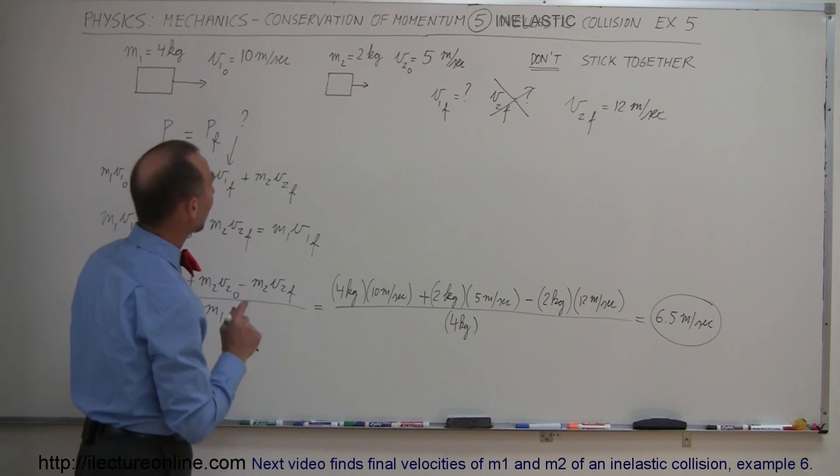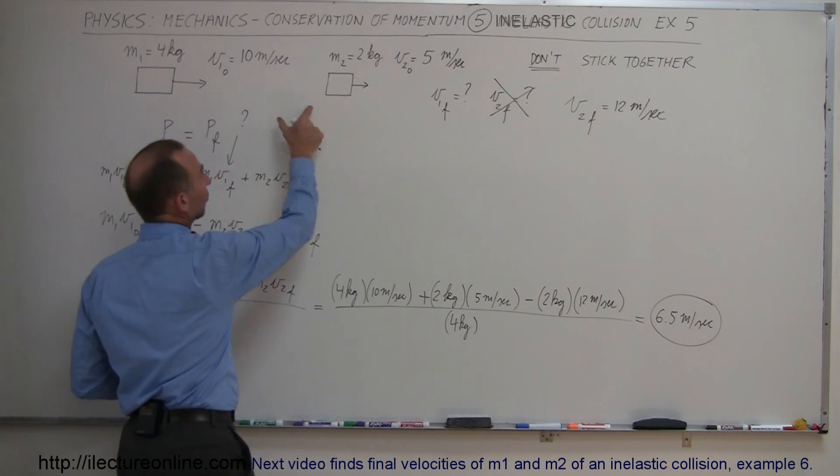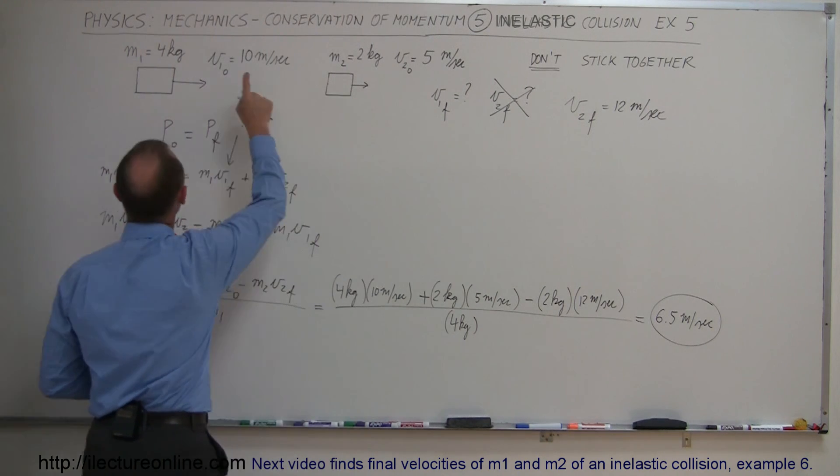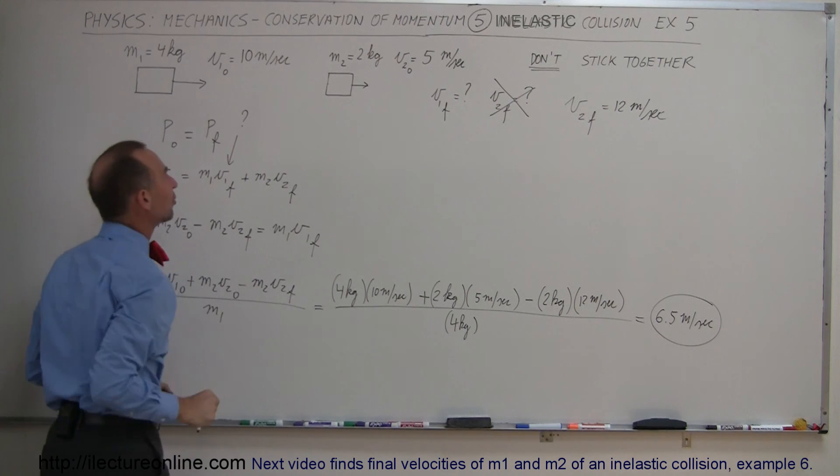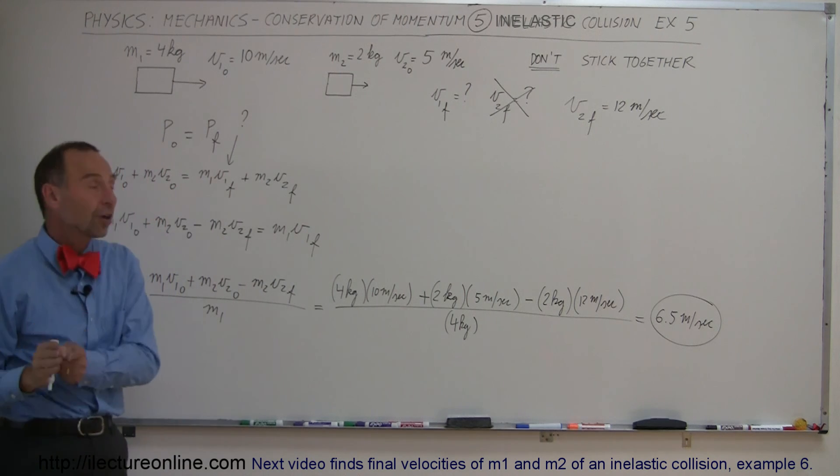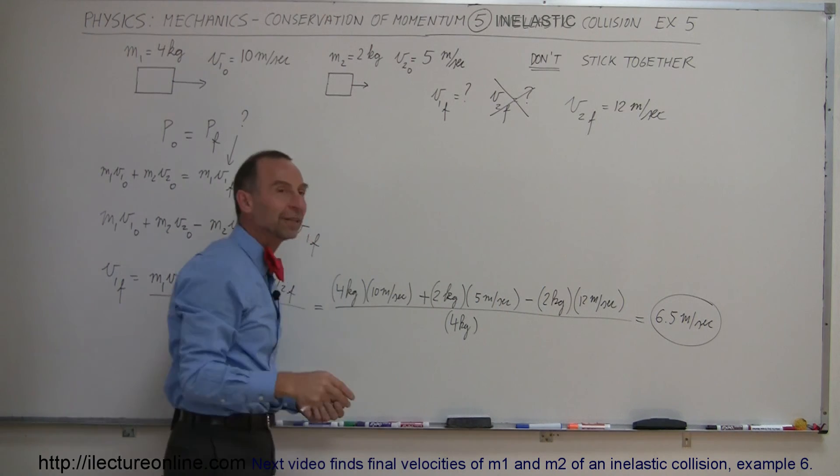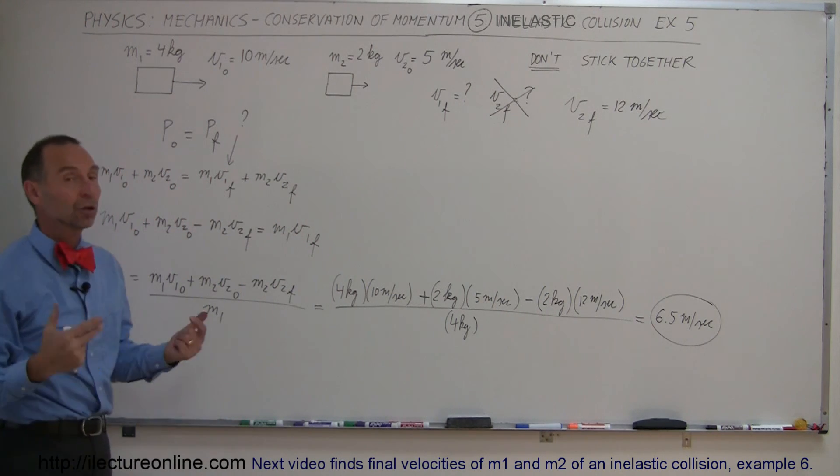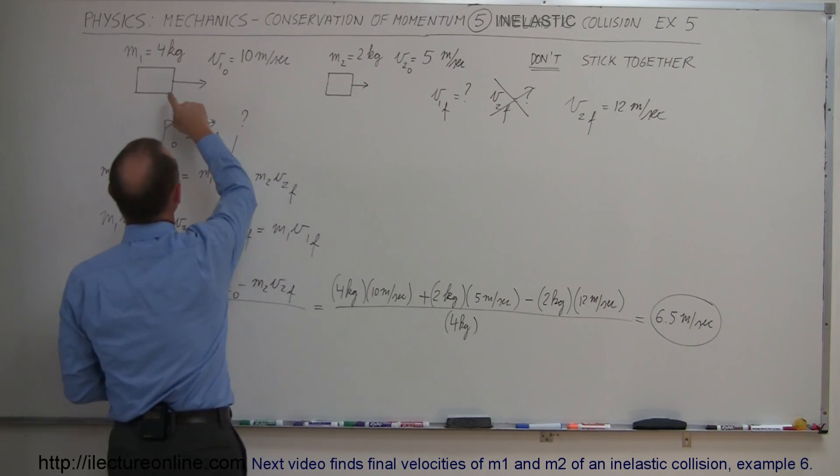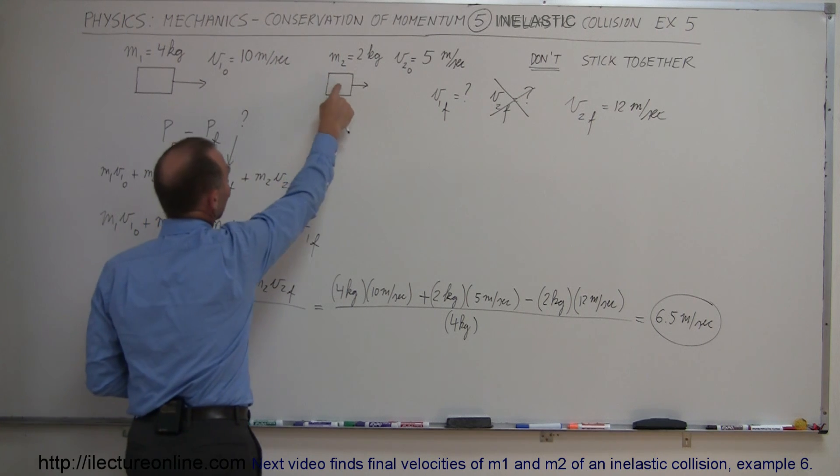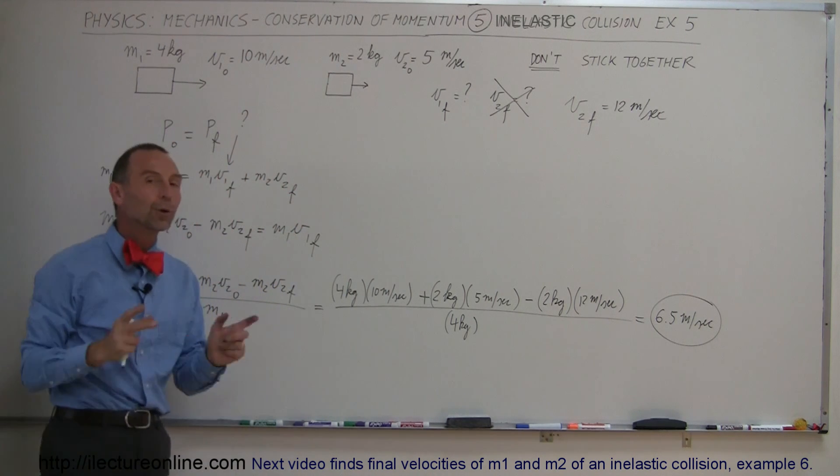So what happens then after the collision? The small mass will move to the right at 12 meters per second. The big mass will have slowed down to 6.5 meters per second. Again, the only way you can solve that one is if they give you one of the final velocities so we can solve for the other final velocity. They could have given you the velocity final for this mass and then you would have had to figure out the velocity final of that one. It's one or the other.